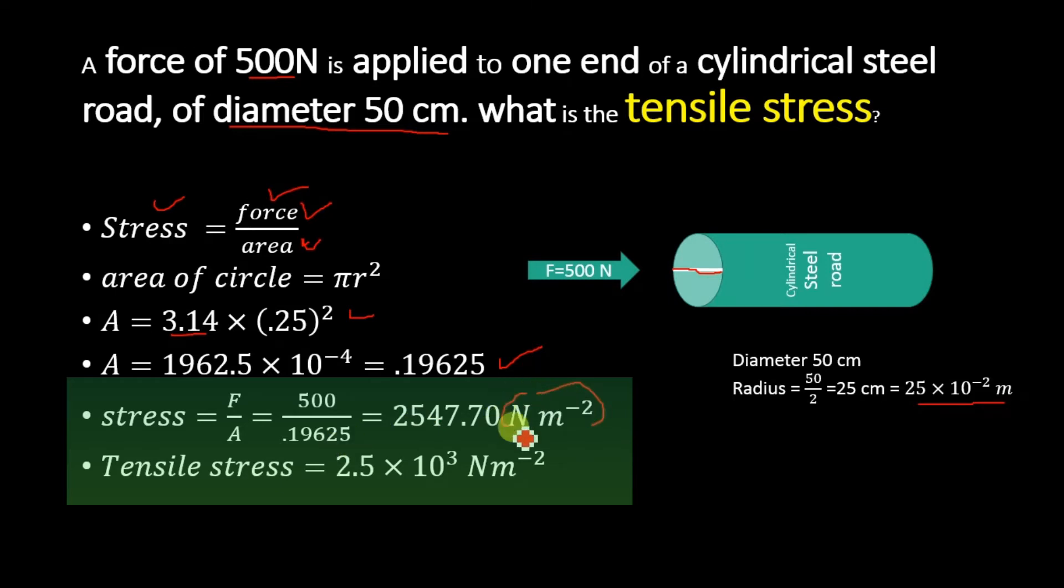So we have tensile stress is equal to 2.5 × 10³ Newton per meter square. That's it. Thank you for watching and don't forget to subscribe Easy Edu for more videos.